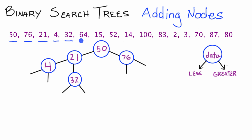Next we add 64. Starting at the root, 64 is greater than 50, so we go down the right pointer. Then 64 is less than 76, so we take the left pointer. So here's 64 now.